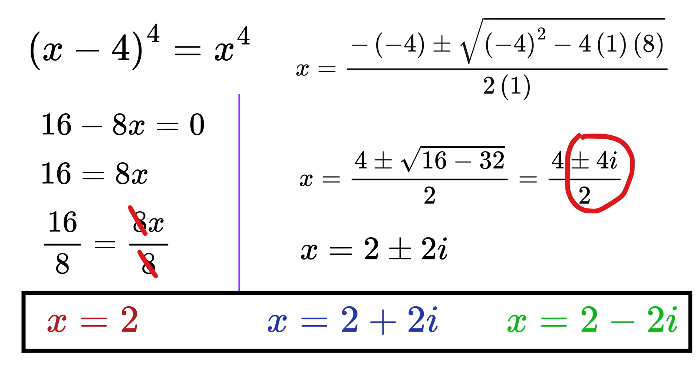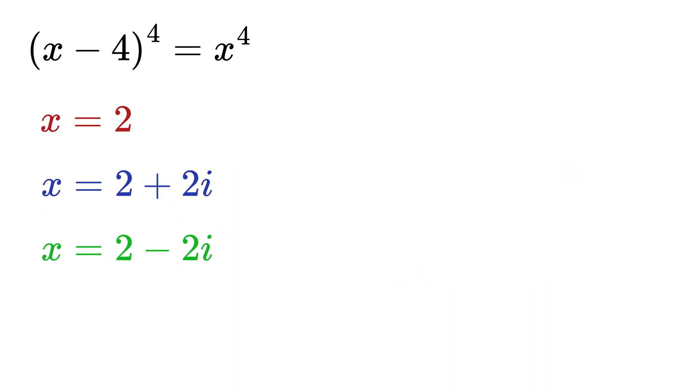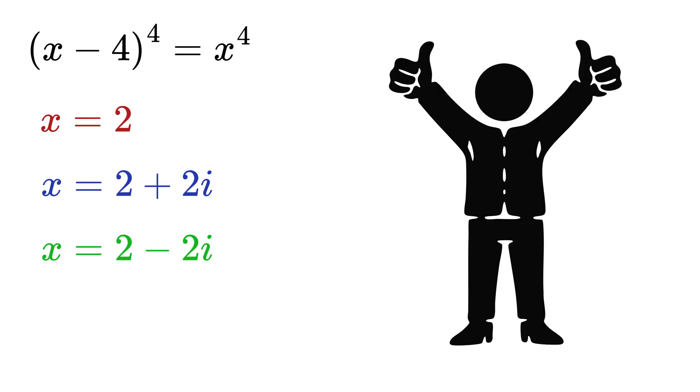This way we have a total of three values for x for this problem. First is x equals 2, then second is x equals 2 plus 2i, and third one is x equals 2 minus 2i. And that's it.